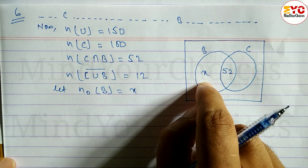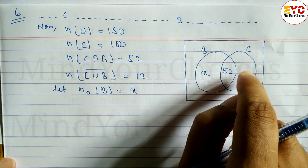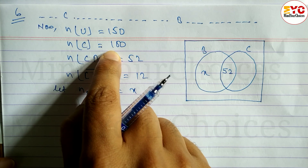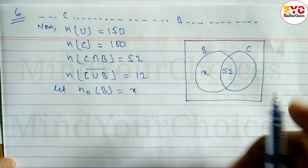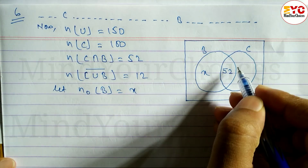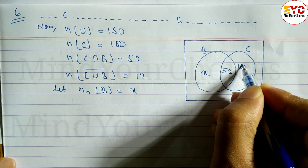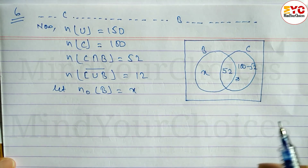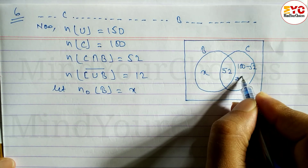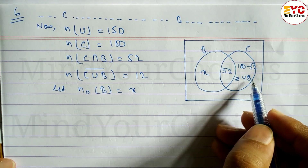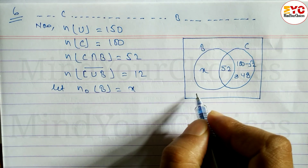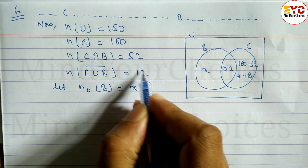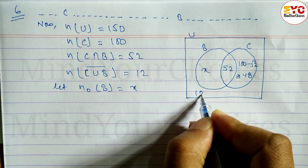So, only-B is X, only-C is 48, the intersection is 52, and the outside complement is 12. Write down 12 in the diagram. Hope you understand the Venn diagram setup so far.